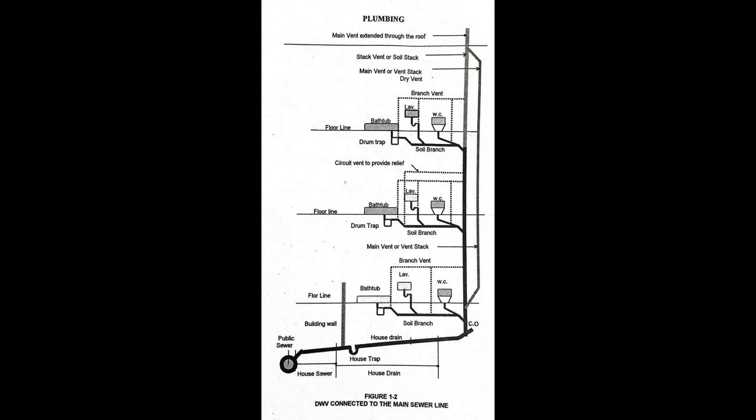Revent pipe, sometimes called individual vent, is that part of a vent pipeline which connects directly with an individual waste or group of wastes underneath or back of the fixture and extends either to the main or branch vent pipe.